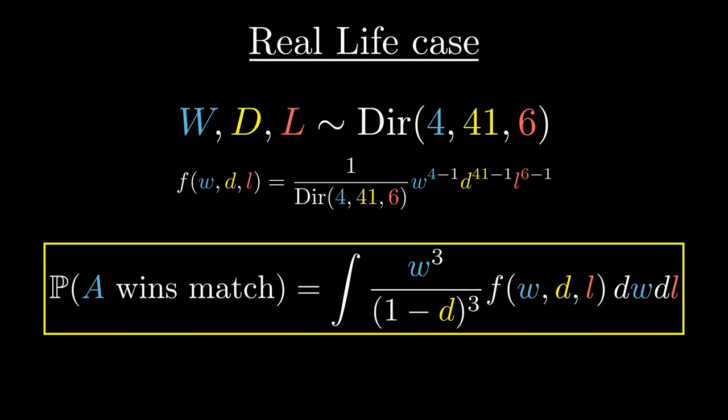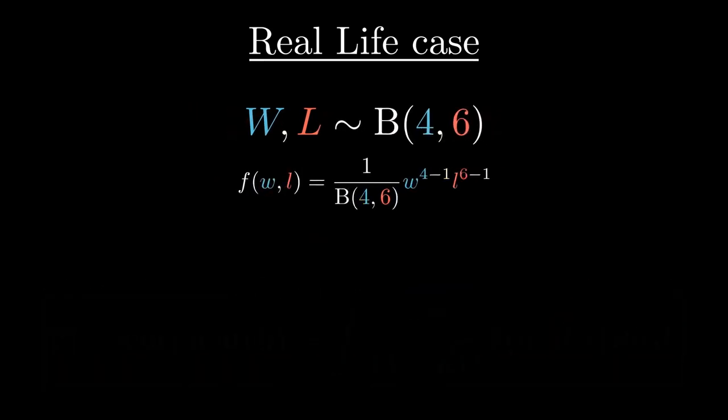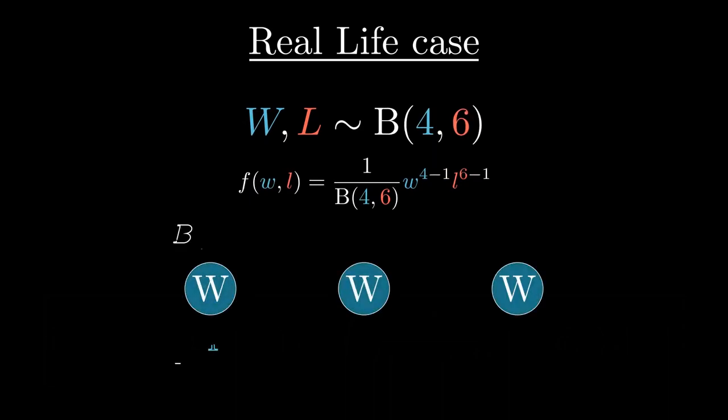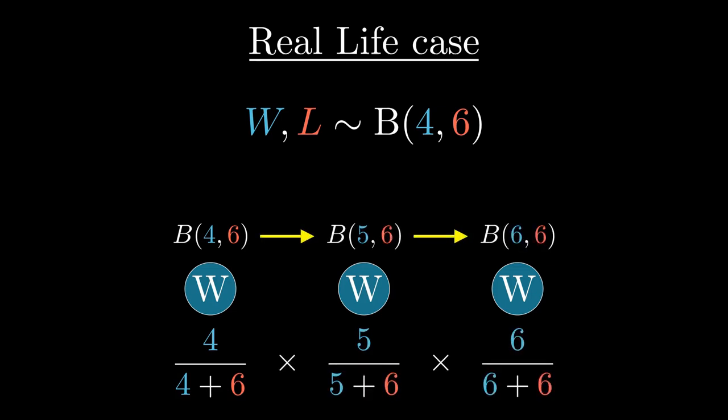Just like we saw earlier in the video, here again, the draws don't account for anything. They can be ignored without affecting the problem setup. Instead of dealing with a Dirichlet distribution, we can use beta to represent player A's winning and losing probabilities. In this modified setup, there is no possibility of a draw, and we just need the probability of A winning the next 3 games. A wins the first game with probability 4/10, the second game with probability 5/11, and the third game with probability 6/12, which is just 1/11, or approximately 9.1%.